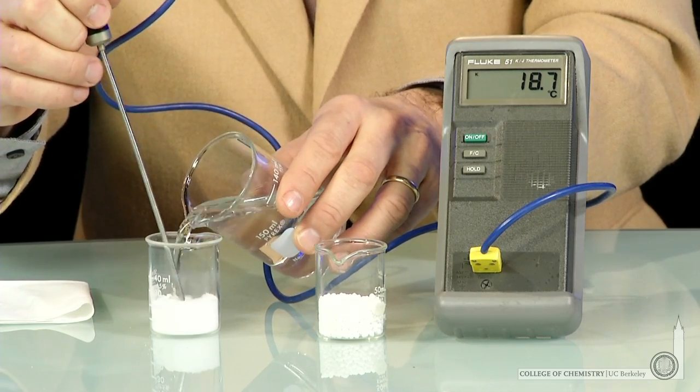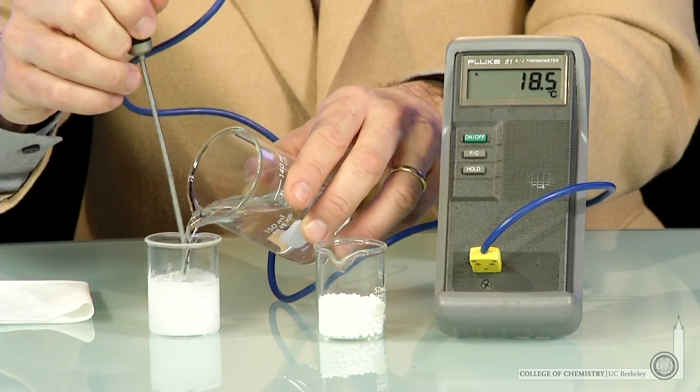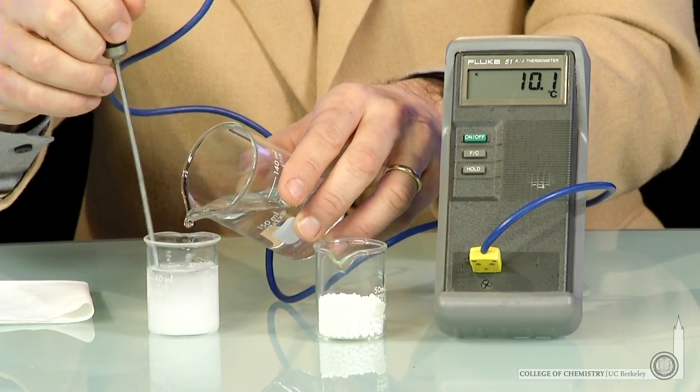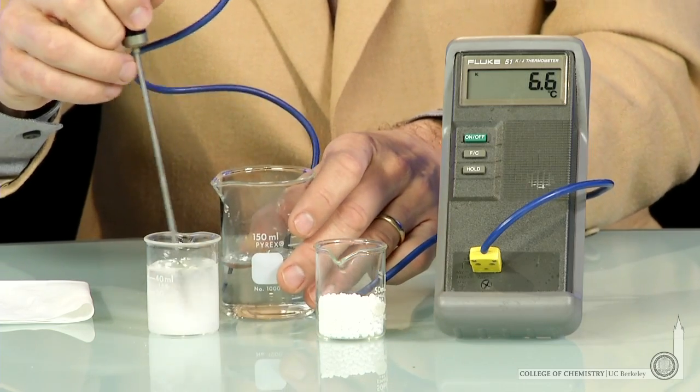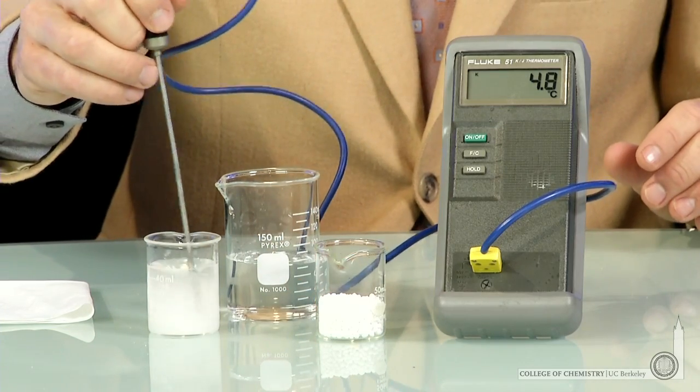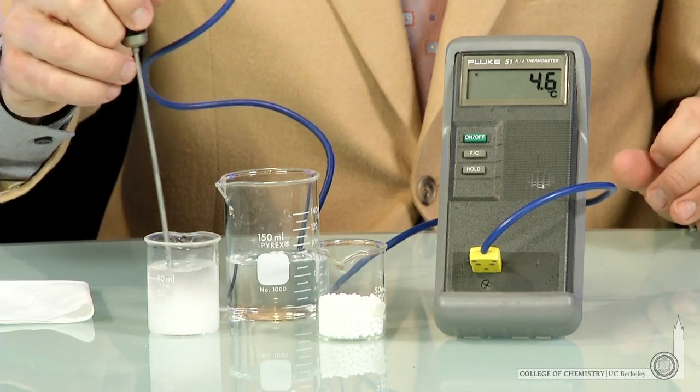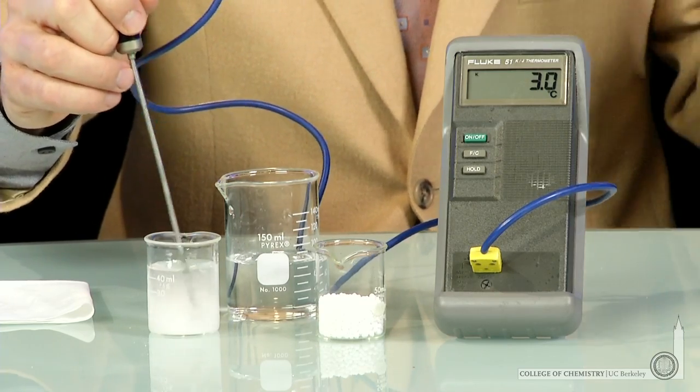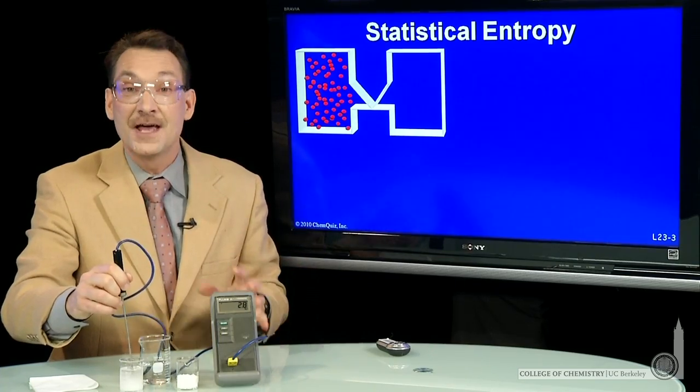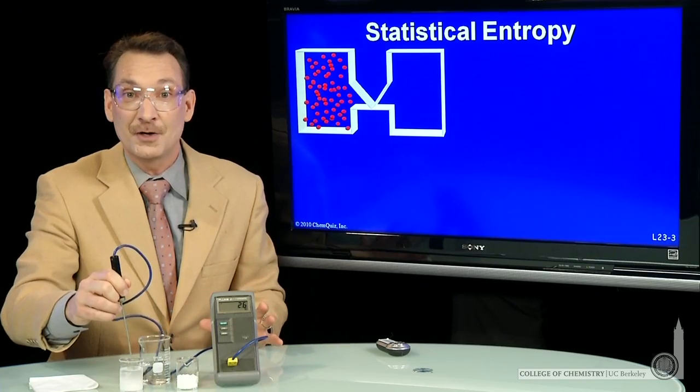I'm going to measure the temperature change as the salt dissolves. So here's ammonium chloride dissolving, and you'll notice as it dissolves, the temperature drops. The surroundings decrease in temperature. That's because this is an endothermic chemical reaction.